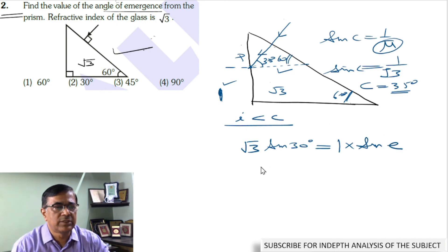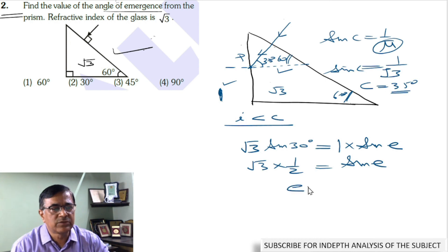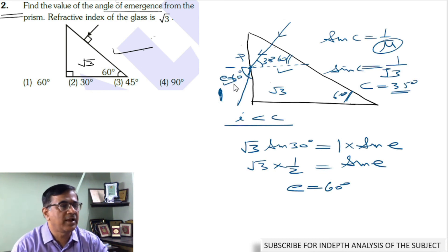This implies that √3 multiplied by half equals sine of e. So the angle of emergence is 60 degrees. The ray deviates from the path and the angle of emergence is 60 degrees. This should be the angle of emergence, so A is the answer.